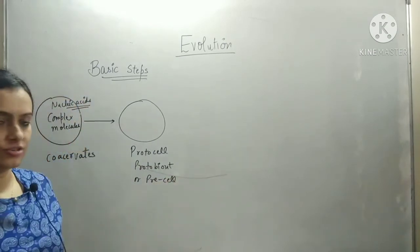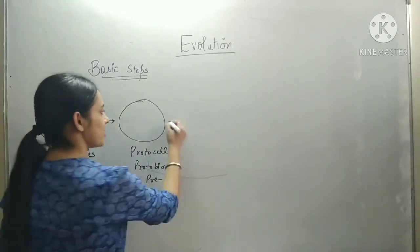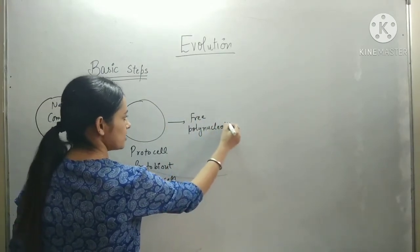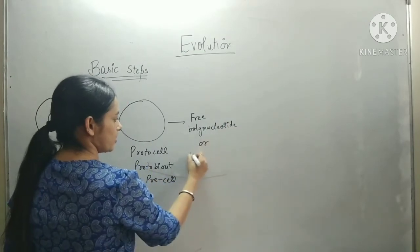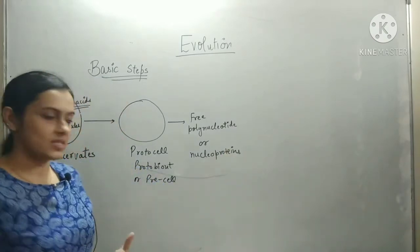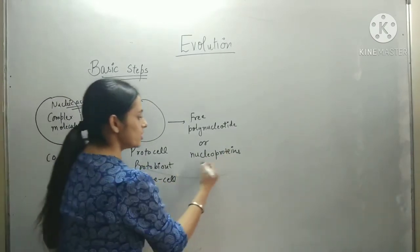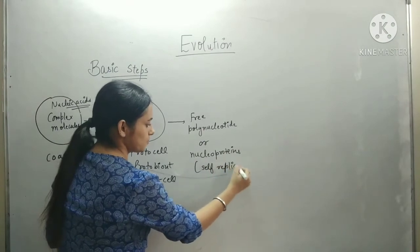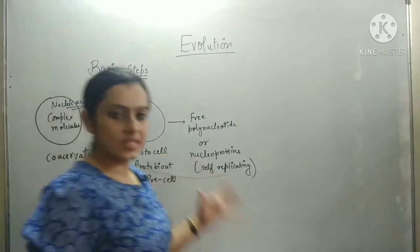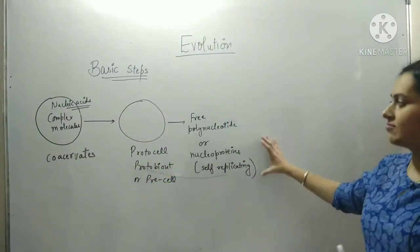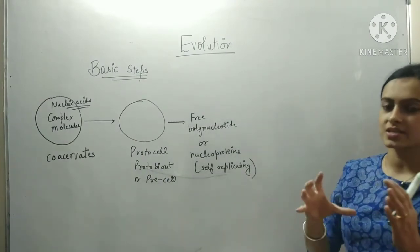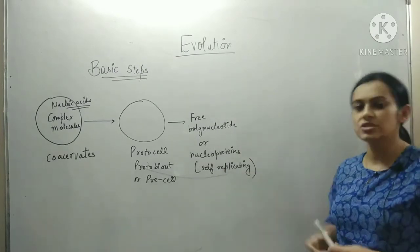Also, when protocells were created, there were free polynucleotides in the environment, or we can say nucleoproteins — nucleic acids and associated proteins. The special feature is that nucleoproteins were self-replicating. After that, natural selection occurred, and the structure that was most favorable and had the greatest advantage at that time was selected.